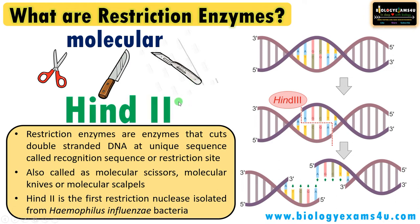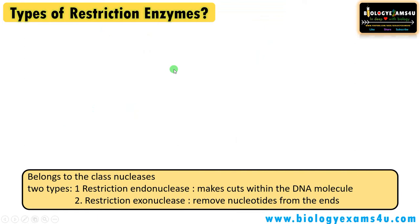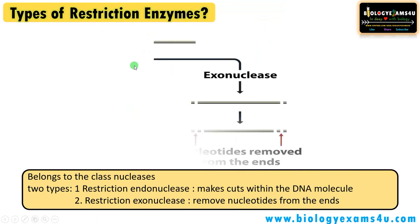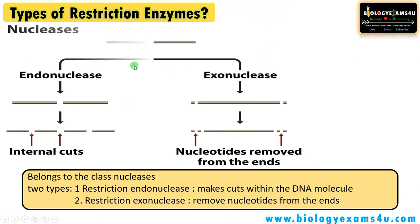HindII was the first restriction endonuclease isolated from Haemophilus influenzae bacteria. Here, 'Hind' refers to the bacterium Haemophilus influenzae, and the second designation indicates the second strain identified of that bacterium.